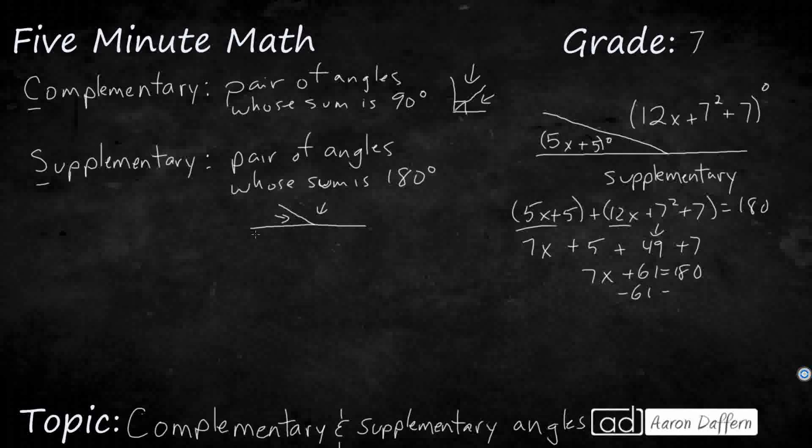Subtract 61 from both sides. You're going to get 7x equals 119. And then if we divide by 7, what are we going to get? Well, we are going to get x equals and that's going to be 17.